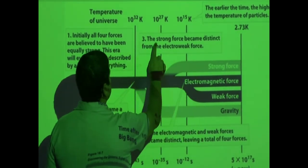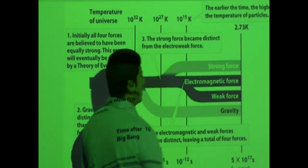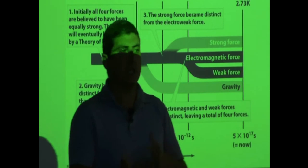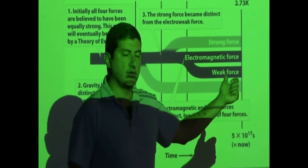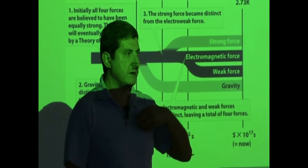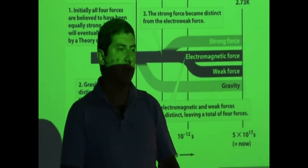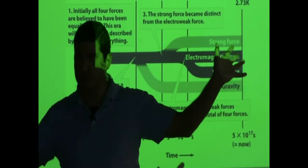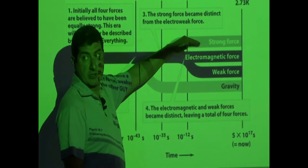Then the next force separates out — the strong force became distinct from the electroweak force. What is the meaning of the strong force? It keeps the protons in the nucleus from repelling each other. If the strong force didn't exist, we wouldn't exist. Our bodies are made up of atoms which have neutrons and protons in the nucleus. If the strong force didn't exist, those protons would all repel each other — all our atoms would be extinguished, and we would die right away.